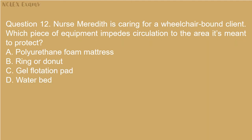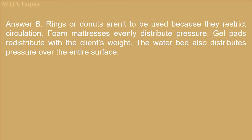Question 12: Nurse Meredith is caring for a wheelchair-bound client. Which piece of equipment impedes circulation to the area it's meant to protect? A) Polyurethane foam mattress. B) Ring or donut. C) Gel flotation pad. D) Water bed. Answer B: Rings or donuts aren't to be used because they restrict circulation. Foam mattresses evenly distribute pressure. Gel pads redistribute the client's weight. The water bed also distributes pressure over the entire surface.